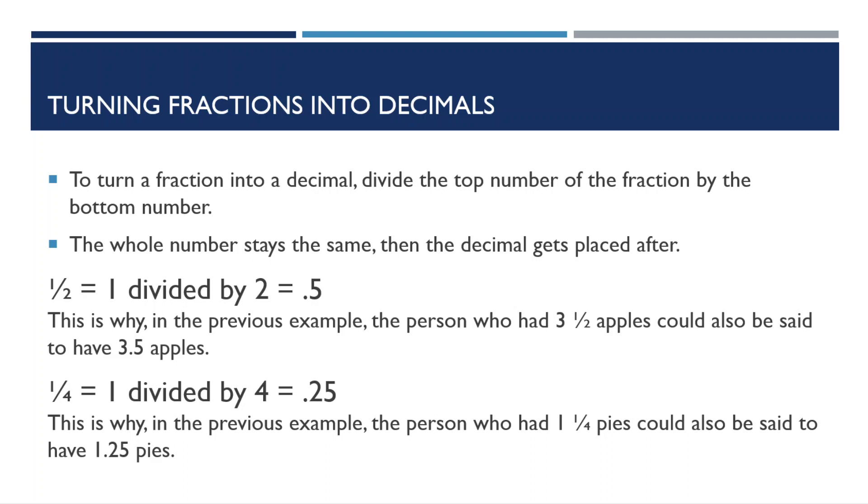For another example, when we have one quarter, we can do one divided by four to get 0.25. This explains why the person who had one and a quarter pies in the previous example could also be said to have 1.25 pies.